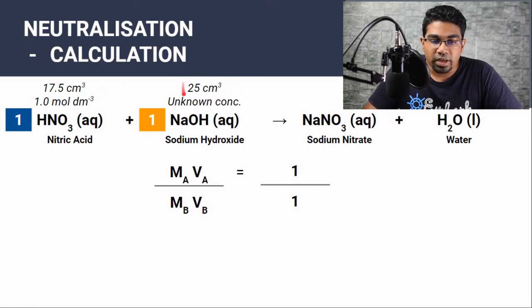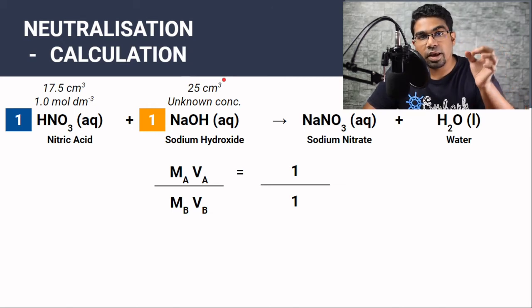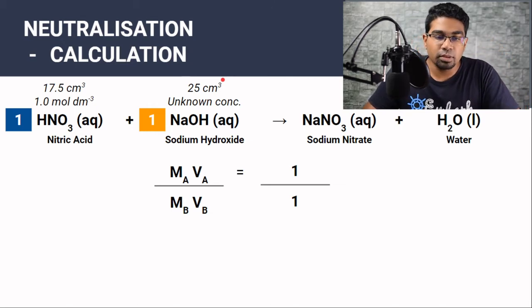And we also know the exact volume of sodium hydroxide that we need because that is what we measured and added to the conical flask in the reaction. And so we are going to find the concentration of this sodium hydroxide solution. How do we do that?